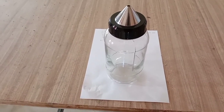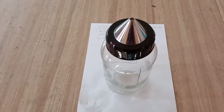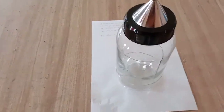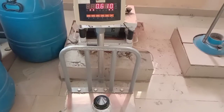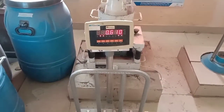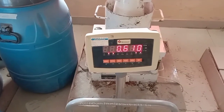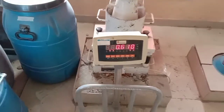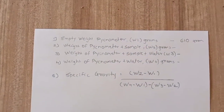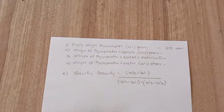This is the pycnometer. The procedure of this experiment is: first of all, we have to take the weight of the empty pycnometer. This is the empty weight of the pycnometer, which is around 610 grams. I have written here 610 grams.